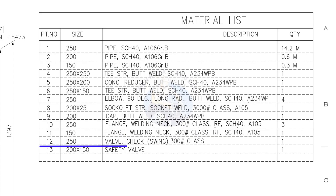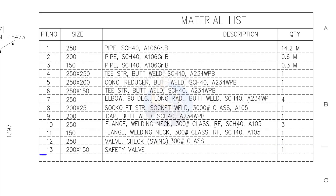Item number 12: 250 NB check valve, swing type, class 300 pound, quantity 1. Item number 13: 200 into 150 safety valve, quantity 1.